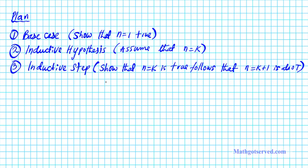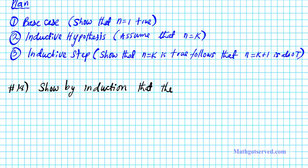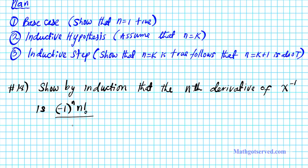So that's the basic rundown of the key components of a proof by mathematical induction. For number 14, we want to show by induction that the nth derivative of x to the negative 1 is negative 1 to the n times n factorial divided by x to the n plus 1.